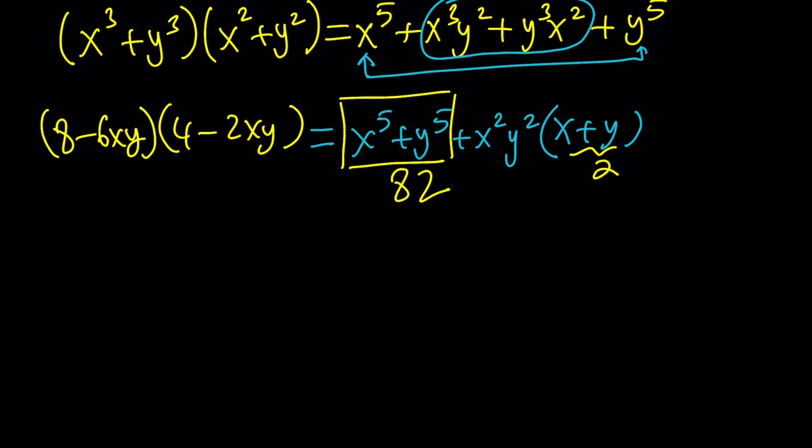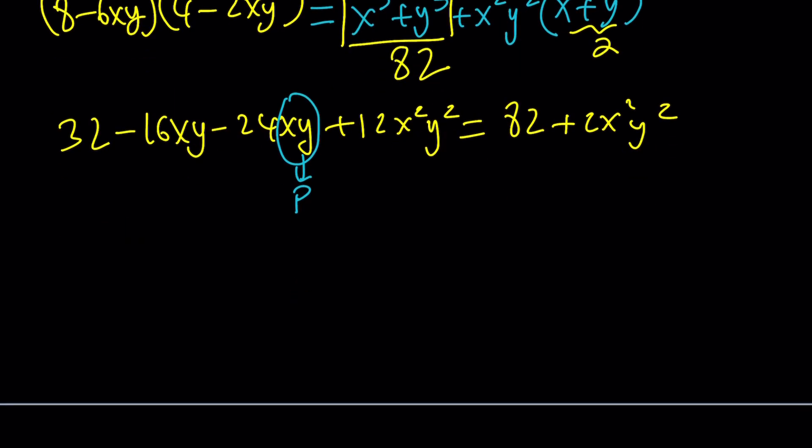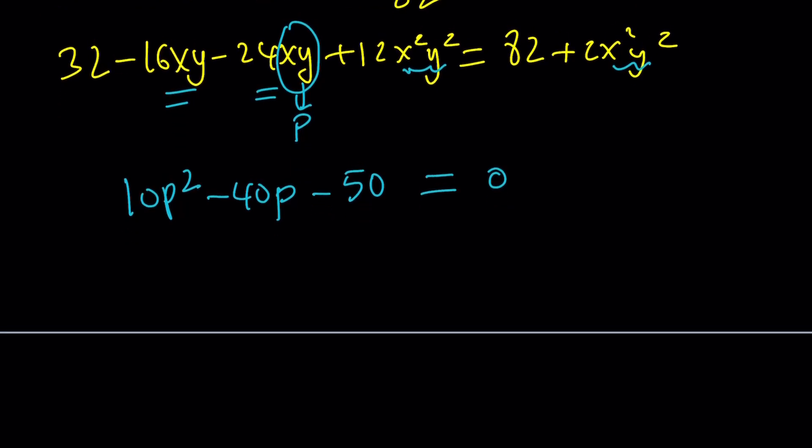We're going to go ahead and distribute this: 32 minus 16xy minus 24xy plus 12x squared y squared equals 82 plus 2x squared y squared. Now is a good time, I think, to replace xy with something. How about calling it P for product? Okay. So now we get the following. This is P squared and this is P squared. So we're going to get 12 minus 2, 10 P squared. And these two are going to give me negative 40P. And then plus 32 minus 82, that's going to give me a minus 50. And the whole thing is equal to 0. So I was able to get everything on the left-hand side. And now we're going to solve for P, which is the product. Great.